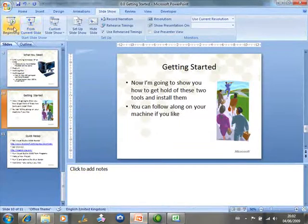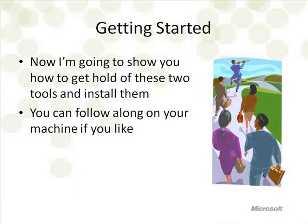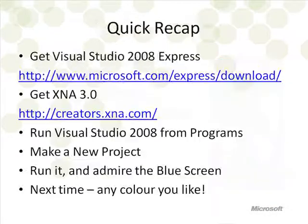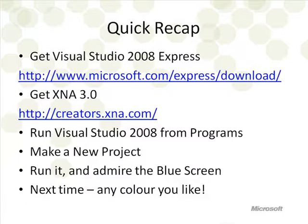At this point I'm going to drop back to the presentation. You can follow along if you like — feel free to pause me, run me backwards, and all that kind of thing. Quick recap: these are the addresses for Visual Studio 2008 Express and XNA. When you get those downloaded, run 2008 from your programs menu, make a new project, run it, admire the blue screen, then press the square to stop it and close the program. Next time we're going to make a program that will make any colour you like — any possible colour. If you can think of the numbers, you can have it on your screen. But that's next time.